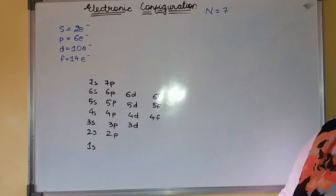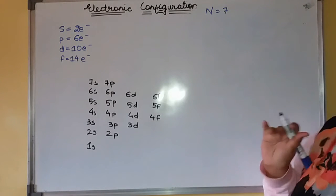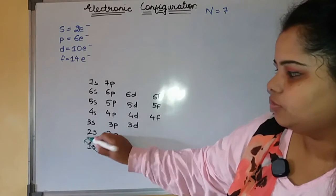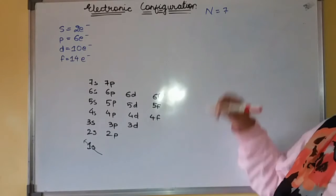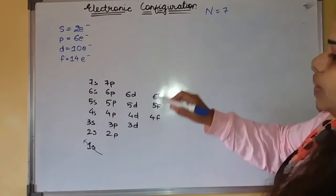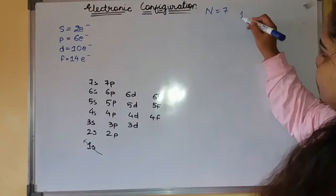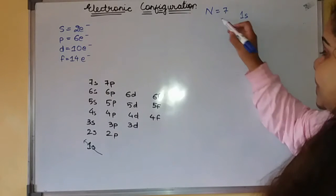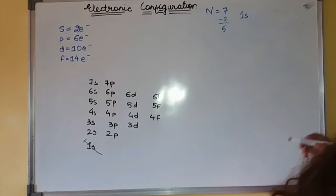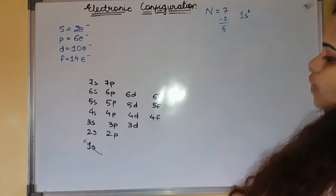This is yet another example of nitrogen, atomic number 7. How you have to do? As I showed you, you have to first fill 1s. You have to write down here 1s. Since it can incorporate only 2, so subtract 2, that becomes 5. So you write it down here, 1s².